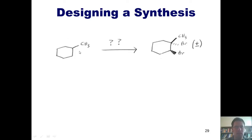Here's our second example. Converting this starting material, methylcyclohexane, into this dibrominated product. How in the world could I do that? Well, once again, I'm going to proceed backwards, starting from our end goal, this product. That is, through retrosynthetic analysis.